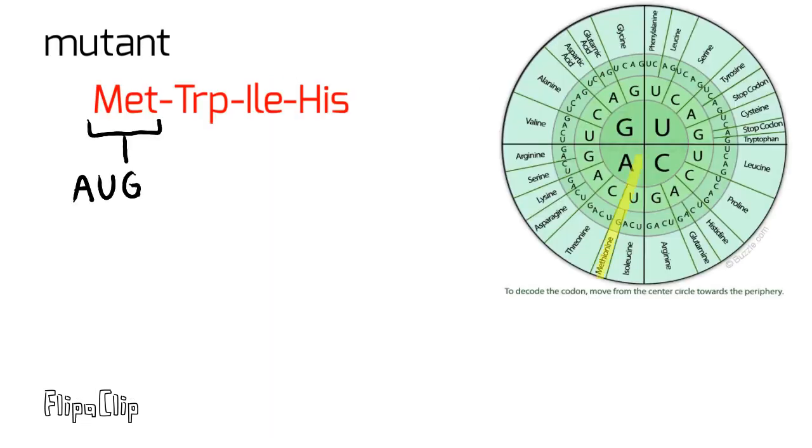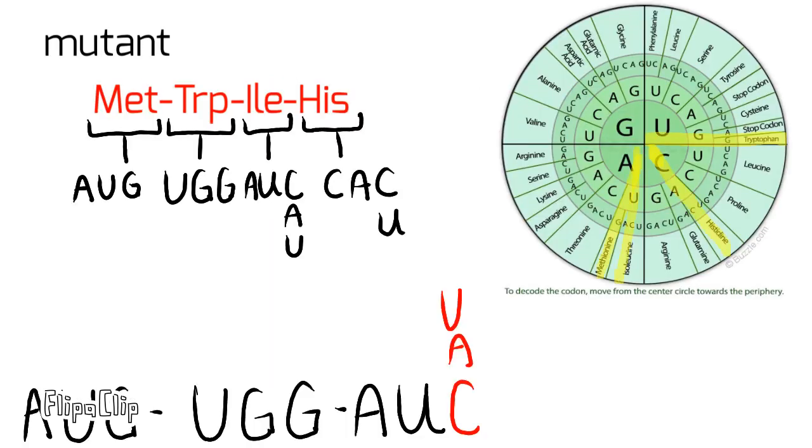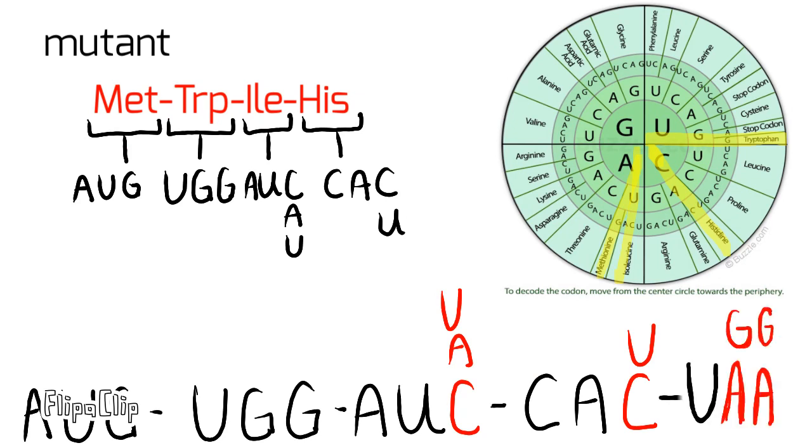Now, we do the same process for the mutant protein. The mutant protein doesn't have any amino acids after histidine, so we have to add in a stop codon as well.